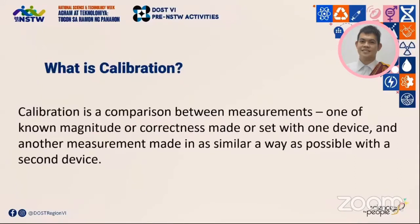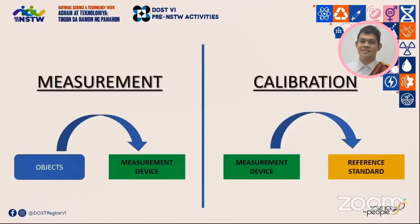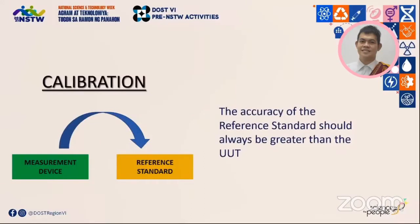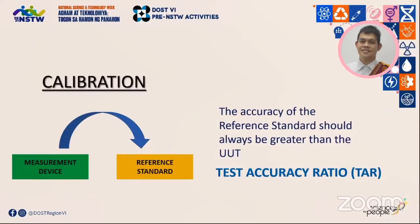Both measurement and calibration are similar in the sense that they both involve a comparison using a measurement device. Their difference lies in the comparison being done. Measurement involves the comparison between an object and a measurement device, while in calibration, it is your measurement device that is compared to a reference standard. When a device is being calibrated, the reference standard must be better in terms of accuracy compared to the unit under test. This is known as the test accuracy ratio or TAR. Typically, the accuracy of the standard should be 10 times the accuracy of the measuring device being tested; however, a ratio of 3 to 1 is acceptable by most standards organizations.